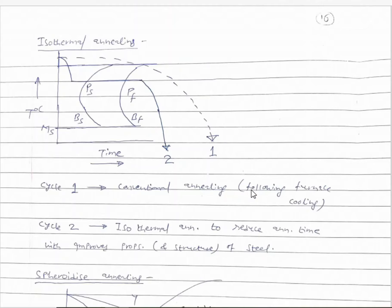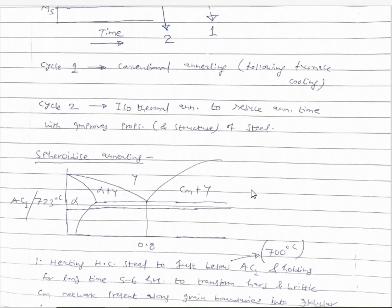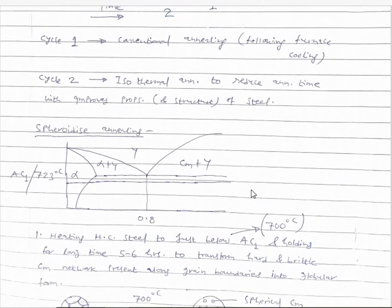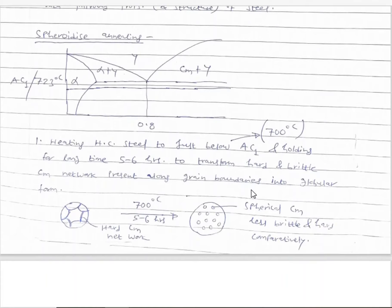Isothermal annealing is preferred to improve the machinability of medium carbon steel having 0.35 to 0.6% carbon. Next is spheroidizing or spheroidized annealing. As its name indicates, this annealing treatment produces spherical-shaped cementite particles, and hence it is given the name spheroidizing or spheroidized annealing.